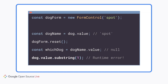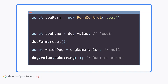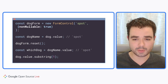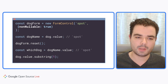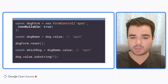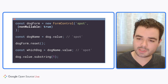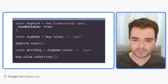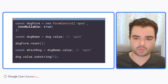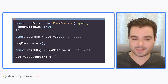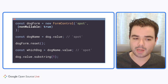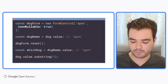Sometimes that's not the behavior you want. In Angular 14, form controls have a brand new option called non-nullable. Instead of resetting to null, the control will now reset to its initial value. This also removes null from the control's type, so in this example we've gotten rid of the nulls entirely and calling .substring is now type-safe.